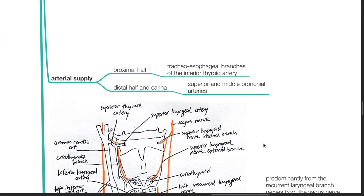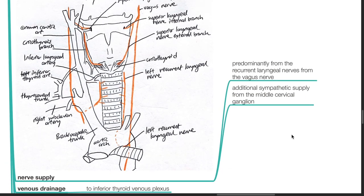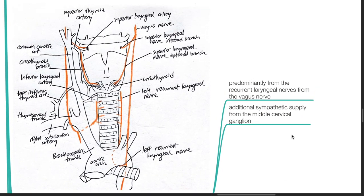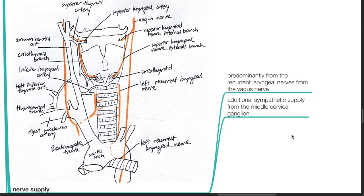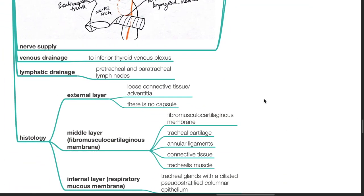Arterial supply: the proximal half is supplied by the tracheoesophageal branches of the inferior thyroid artery. The distal half and the carina are supplied by the superior and middle bronchial arteries. Nerve supply is predominantly from the recurrent laryngeal nerves of the vagus nerve, with additional sympathetic supply from the middle cervical ganglion. Venous drainage is to the inferior thyroid venous plexus. Lymphatic drainage is to the pre-tracheal and paratracheal lymph nodes.